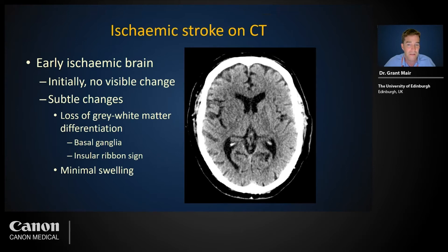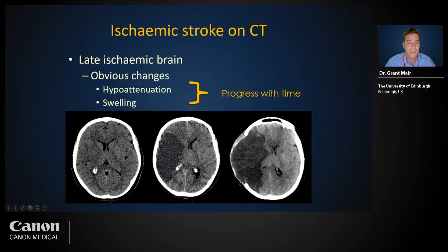Late ischemia on CT is usually easily visible, with marked drop in tissue attenuation seen as darker areas and advanced swelling. These features are secondary to vasogenic edema — a more rapidly progressive state with large net water gains in the brain.